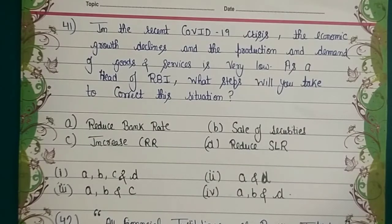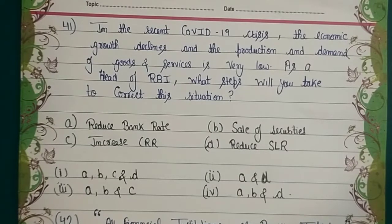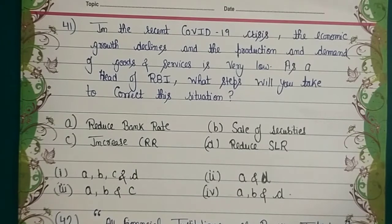Question 41: In the recent COVID-19 crisis, economic growth is very low, and production and demand for goods and services is very low. As the head of RBI, what steps would you take to correct this situation? The options are: reduce bank rate; sell securities in the open market; increase CRR or SLR; or reduce CRR or SLR. When the economy is down and deflation is occurring, you need to add money to the market. So you reduce the bank rate, reduce CRR, and reduce SLR — so that banks keep less with themselves and give more to the public to stimulate demand.